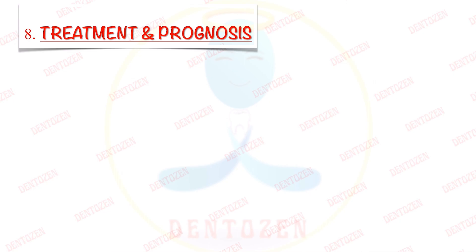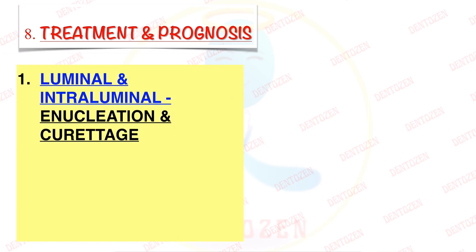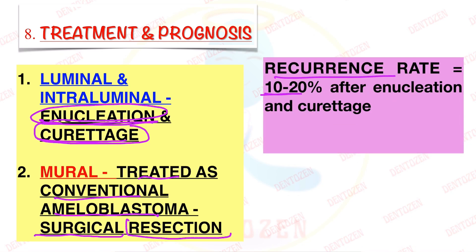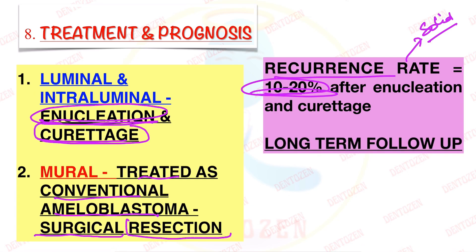Let's look at the treatment. The luminal and intraluminal types can be treated with simple enucleation and curettage — we remove the tumor and curettage the remaining remnants. The mural type is treated like the conventional Ameloblastoma, meaning surgical removal or resection. However, even with enucleation and curettage, a recurrence rate of 10–20% is seen — less than the solid type, but recurrence can still occur, so long-term follow-up should be done.